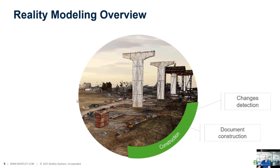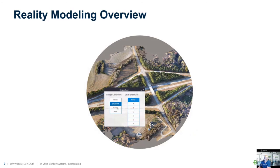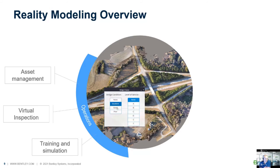During the construction phase, we check changes. Some users create models once a week or once a month and compare them to the design to see if there are any changes. We document construction, but also for payment to contractors — so you can see certain stages and know if the contractor did the work. In the operation phase, we do asset management, linking attributes to assets. We can do visual inspections of things like cell towers or bridges, and we can use it for training and simulation — for example, loading it into HoloLens or a VR application where you can walk through your plant site.